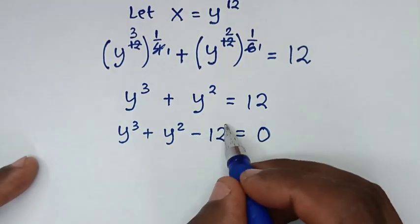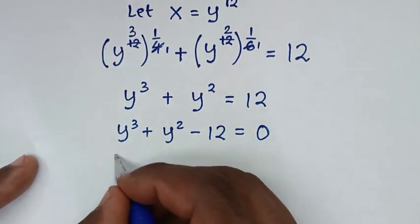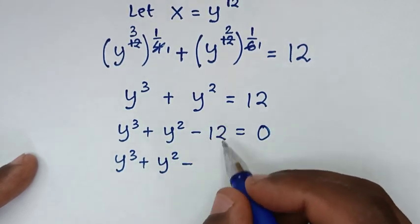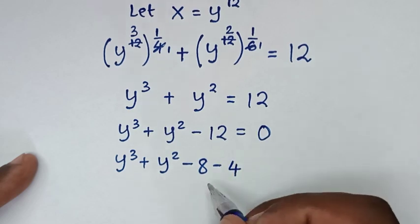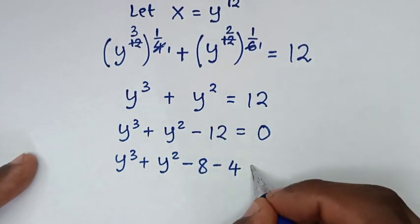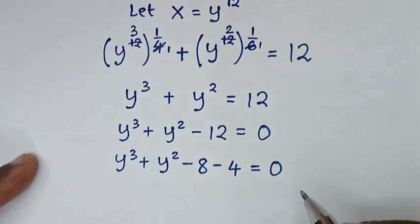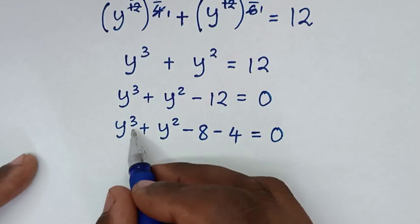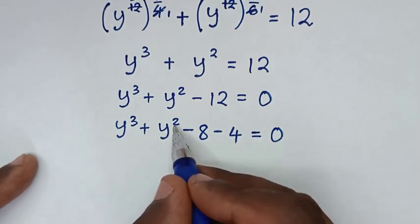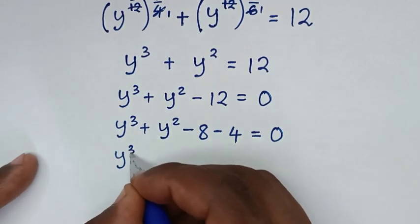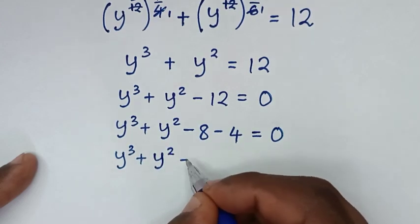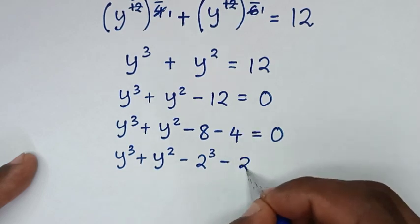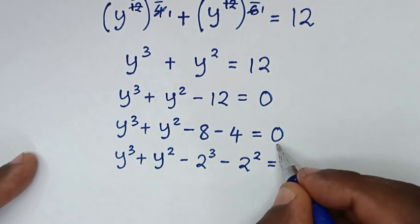We'll split 12 according to these exponents: y to the power of 3 plus y to the power of 2, minus 12, which is the same as minus 8 minus 4. Then these numbers will be changed into exponents: minus 8 is the same as 2 to the power of 3, and minus 4 is the same as 2 to the power of 2, equals 0.